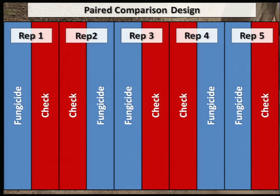To make this work, an extra pass or round, depending on equipment size, is made so treatments can be compared in a different order across the field. For instance, in Rep 1 we compare the fungicide to the check. In Rep 2, we compare the check to the fungicide treatment. This pattern continues for as many reps as you have in the field.